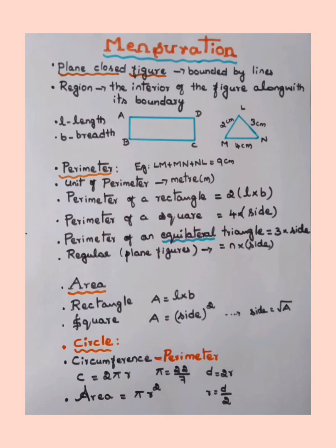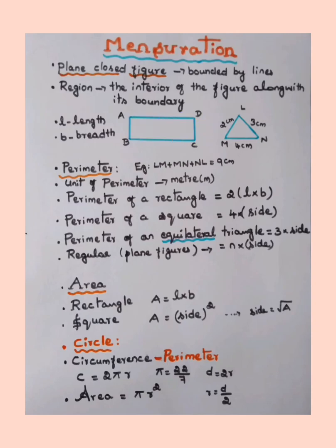We will learn about solid figures later. First we'll see plane figures. In a plane figure, the region means the interior of the figure along with its boundary. Plane figures are usually represented with two dimensions: length and breadth.